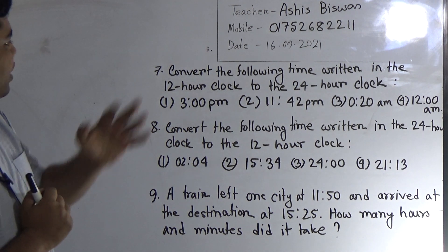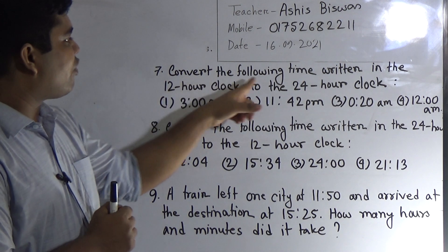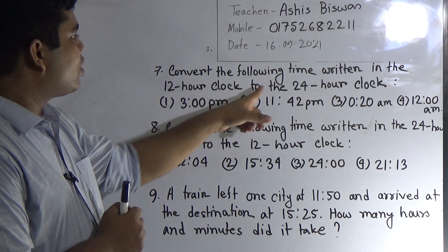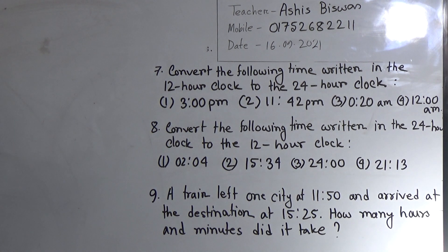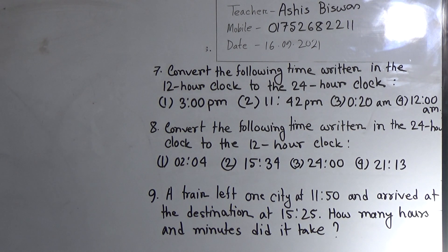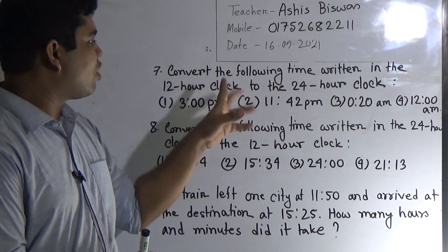Question number 7: Convert the following time written in the 12-hour clock to the 24-hour clock. Before starting to solve, you need to know how many types of clocks there are. There are two types of clocks — one is the 12-hour clock and another is the 24-hour clock. The time is written in 12-hour clock and we want to convert it into 24-hour clock.